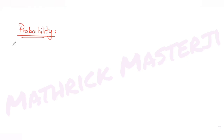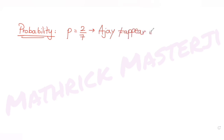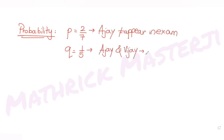The question tells us: Ajay will not appear in the JEE exam with probability p = 2/7 — so this represents Ajay not appearing in the exam. And both Ajay and Vijay will appear in the exam with probability q = 1/5, meaning Ajay and Vijay both appear in the exam.